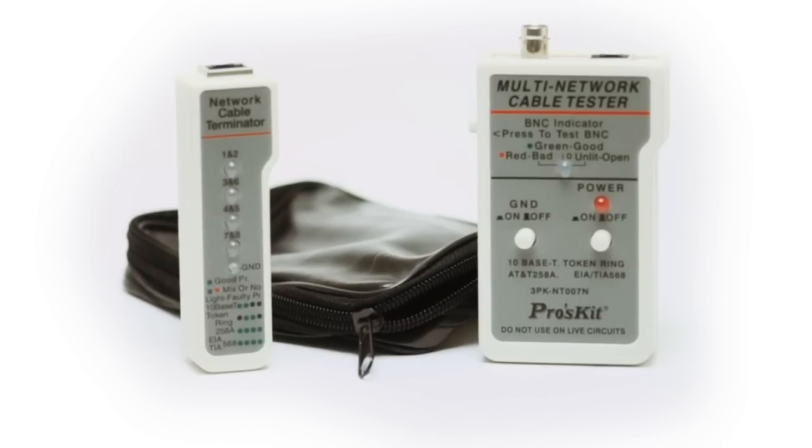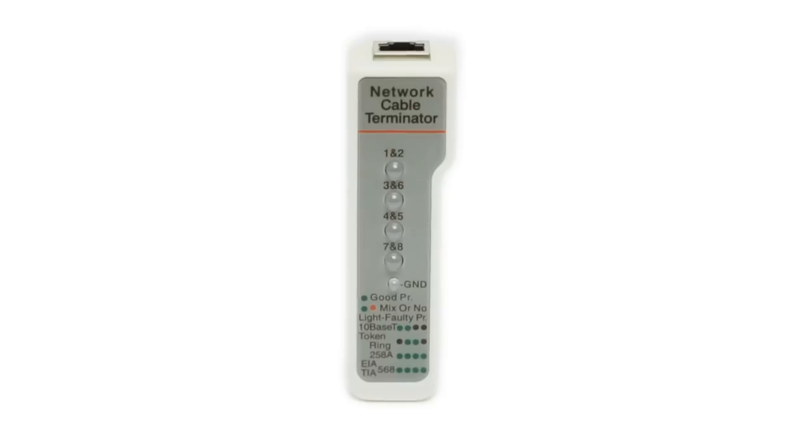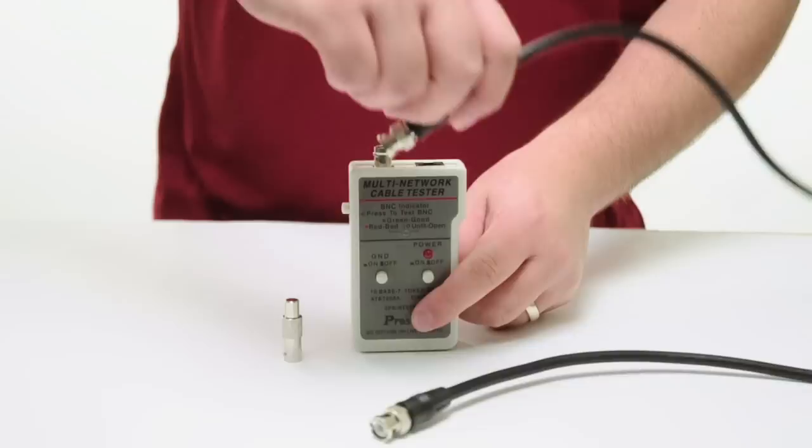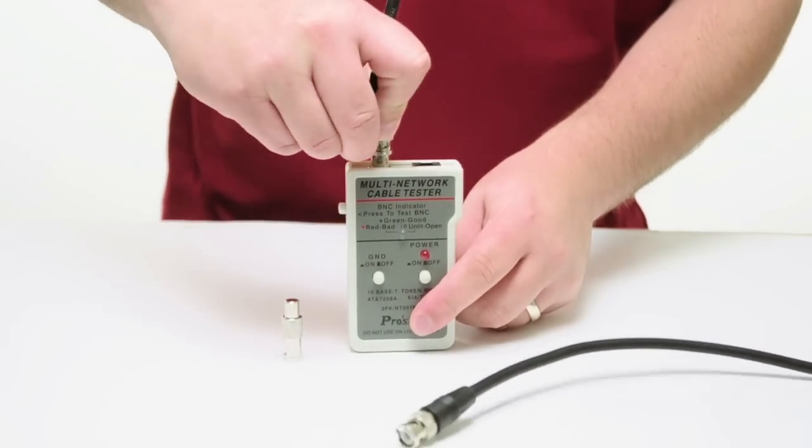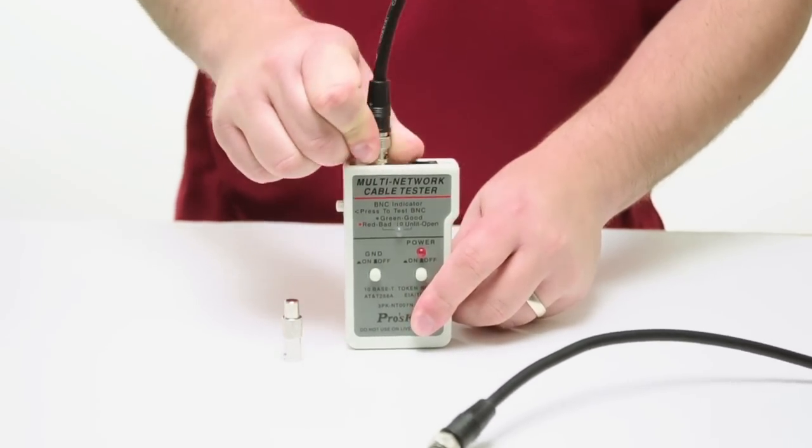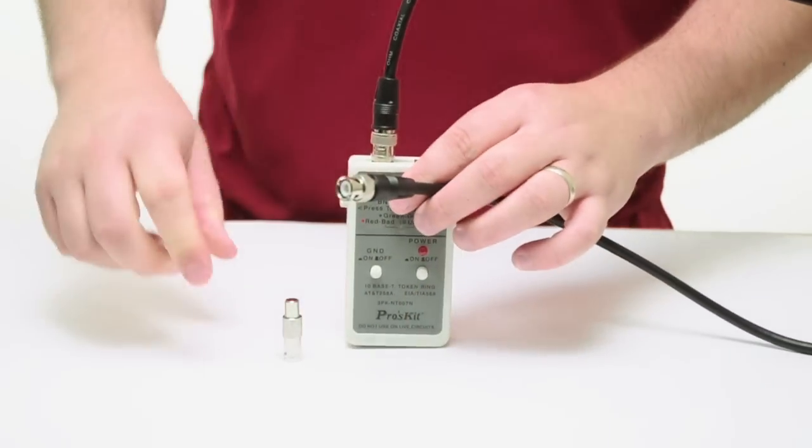The multi-modular tester comes with a remote which allows for testing cables before or after installation. To test a coax cable, plug one end into the BNC socket on master unit and then plug the other end to the BNC terminator piece.